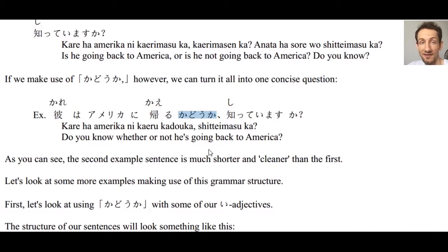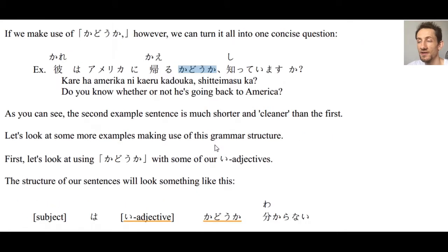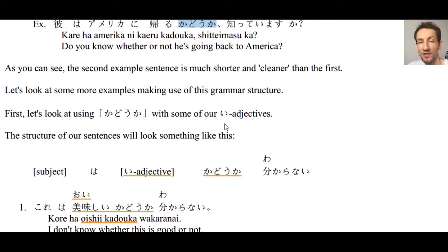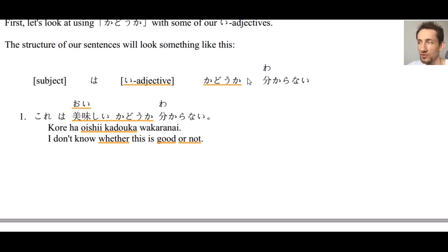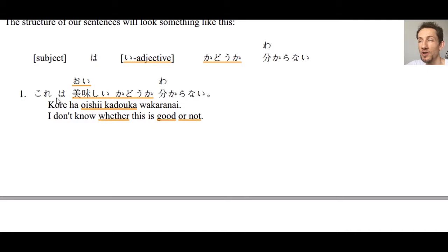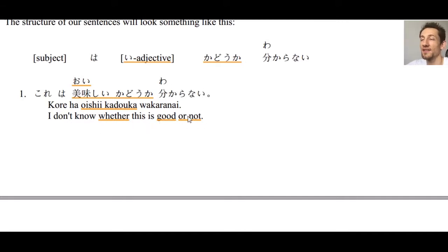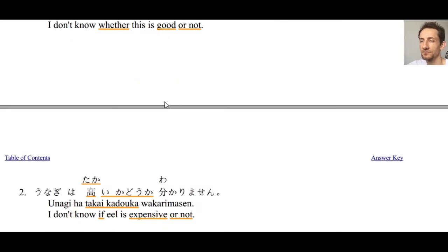Let's look at い-adjective examples. The structure is: subject wa + い-adjective + かどうか + わからない. Number one: これはおいしいかどうかわからない — I don't know whether this is good or not. おいしいかどうか means 'tasty or not tasty.' So おいしいかどうかわからない — I don't know if this is good or not.